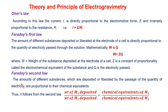Faraday's second law states that the amounts of different substances deposited or liberated by the passage of a quantity of electricity are proportional to their chemical equivalence. Thus, if M1 and M2 are two solutions and the same quantity of electricity Q is passed, the weight of M1 deposited divided by the weight of M2 deposited equals the chemical equivalent of M1 divided by the chemical equivalent of M2. Chemical equivalent equals atomic or molecular weight divided by the number of electrons lost or gained.